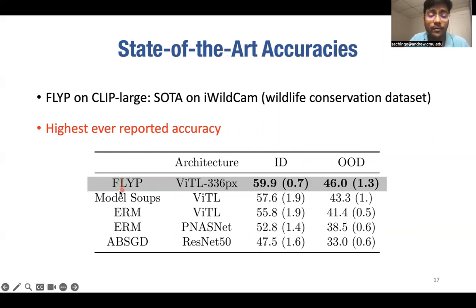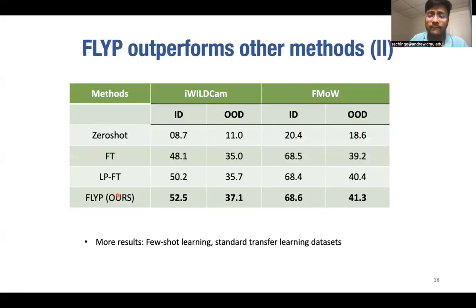FLYP outperforms even computationally expensive approaches of model soups which ensemble more than 70 fine-tuned models which are fine-tuned using various accuracies. In the paper, we do further comparisons on many few-shot learning benchmarks, standard transfer learning benchmarks and show that our approach outperforms current state-of-the-art like LPFT or standard linear probing and fine-tuning both in-distribution as well as out-of-distribution.